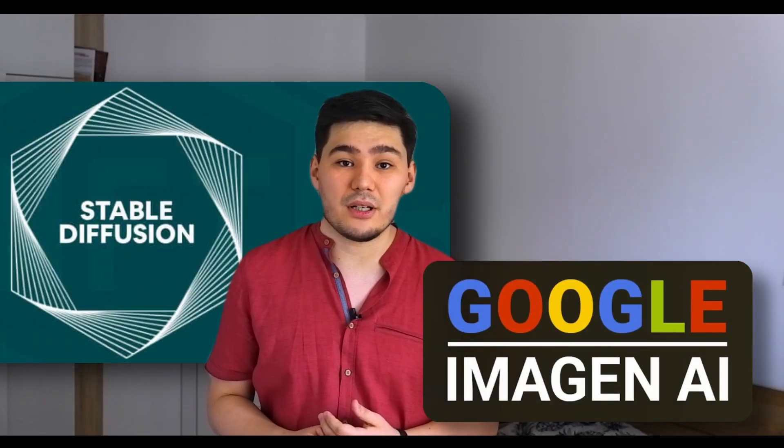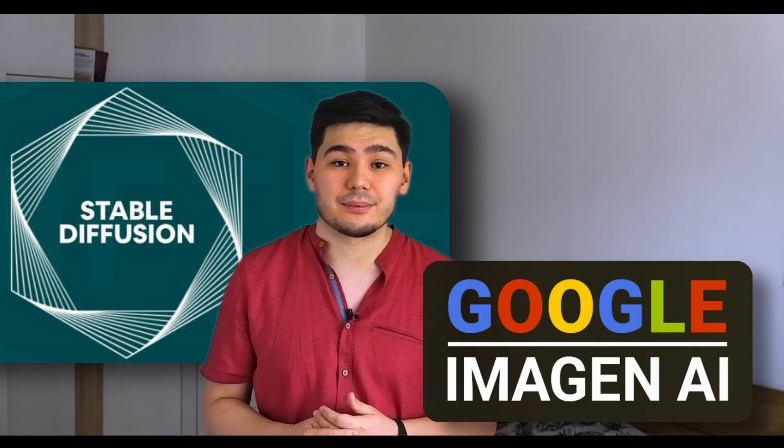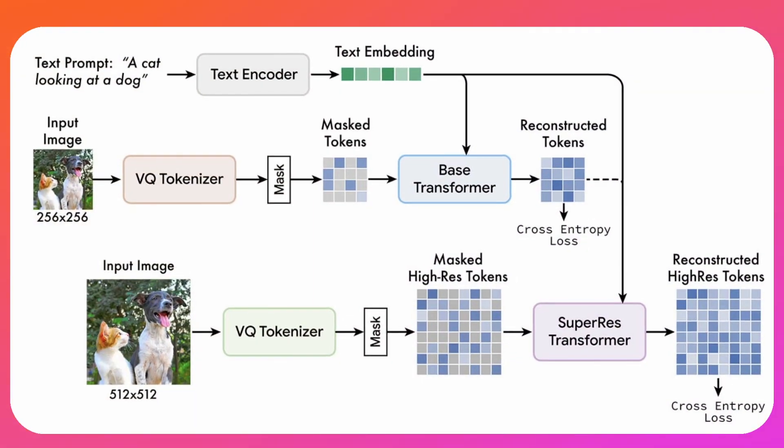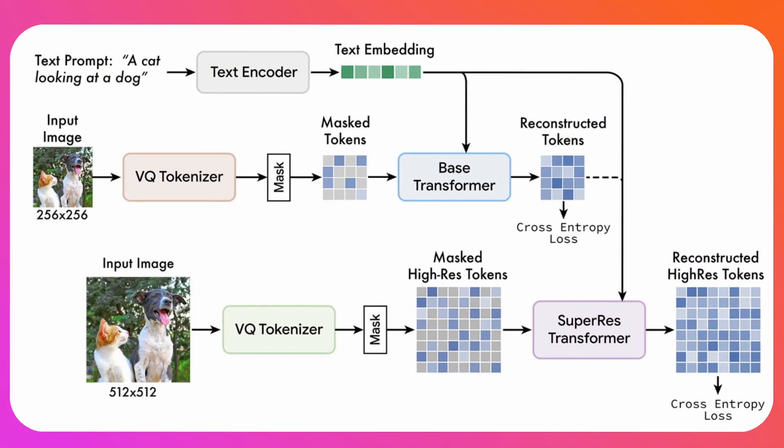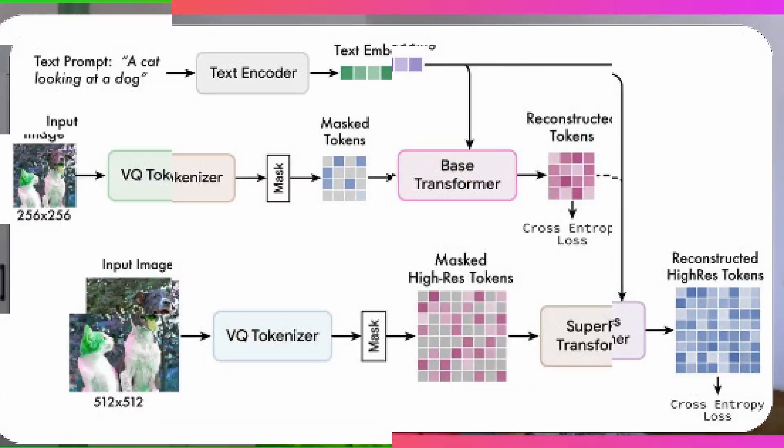And now, what makes Style Drop so unique? Firstly, Style Drop outperforms diffusion-based techniques like Imagen and Stable Diffusion models when it comes to style tuning. It collaborates with Muse, a discrete-token-based vision transformer, to generate impressive stylized pictures. Maybe it sounds a bit complicated — let's break it down.